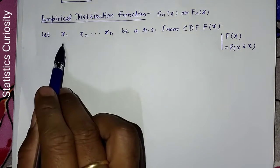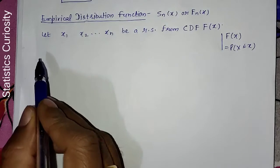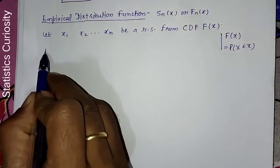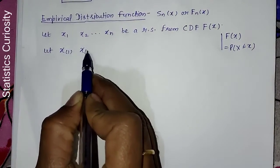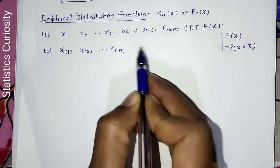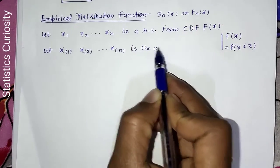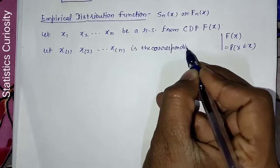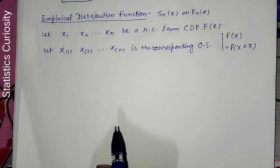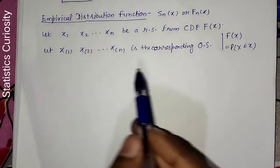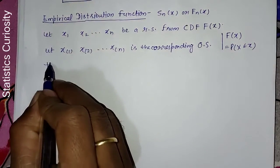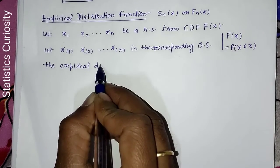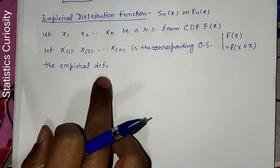Now, the empirical distribution function: if we have a random sample and arrange it as order statistics — that is, arrange the observations in ascending order — then let x(1), x(2), up to x(n) be the corresponding order statistics. The resulting function is called the empirical distribution function, also known as the sample distribution function.